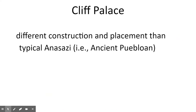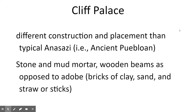Typically Anasazi constructions are done a little differently. Cliff Palace, which is part of the Mesa Verde construction, uses stone, mud mortar, and wooden beams — as opposed to just adobe, which would have been typical. That's part of why we're noting Cliff Palace in particular.